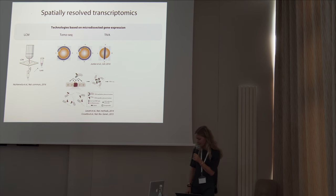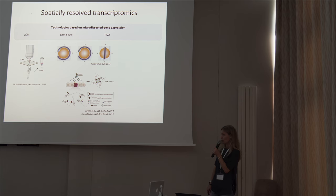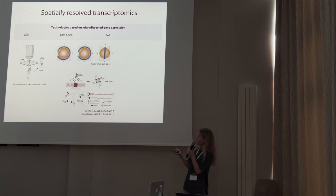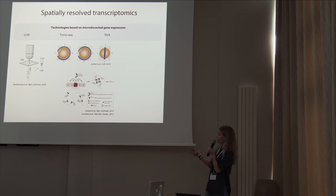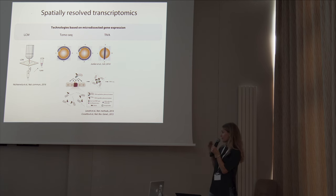Another way is to use Tiva — the only technology that can analyze spatial gene expression in live tissue. You use a Tiva tag that penetrates into cells of live tissue, and you activate specific cells of interest. When you activate them, the Tiva tag will automatically bind to the mRNAs within the cells, and then you can extract those cells and analyze their gene expression. It is quite low throughput because you cannot analyze many cells in parallel.